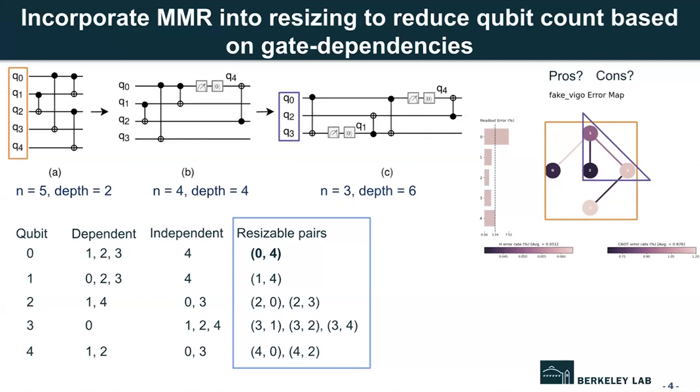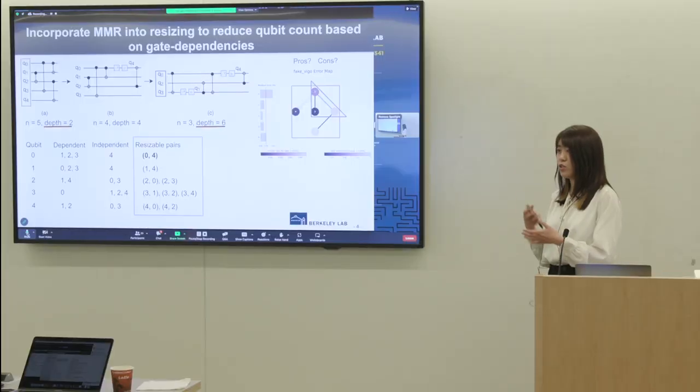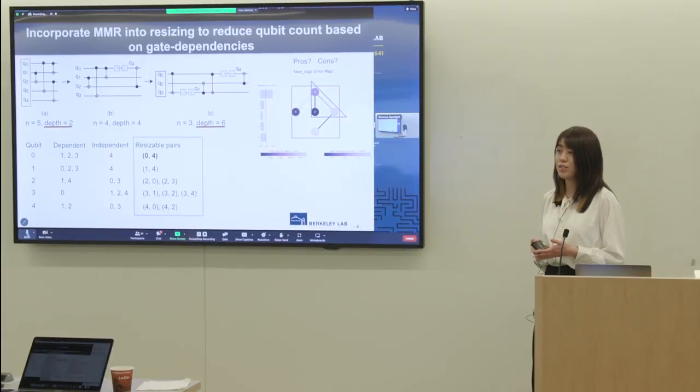But this method also has its disadvantages. We can see the circuit depth grows from two to six in the end. Qubits have a short coherence time. So if the circuit depth grows, it means that qubits need to stay active for a longer time, which can introduce some error. So we need to trade off between the qubit count and circuit depth.